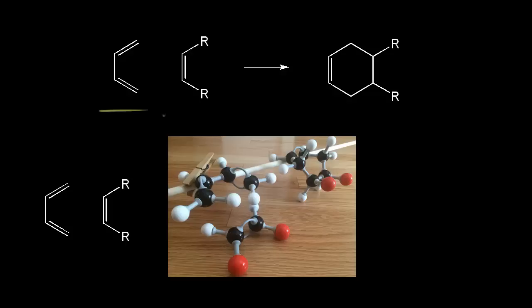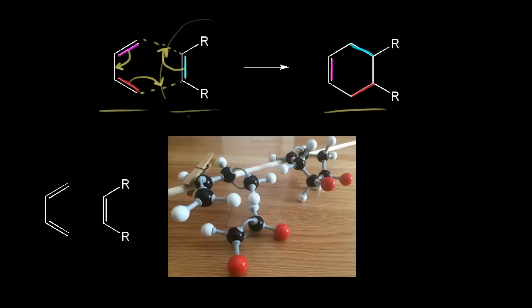In this video, we're going to look at the stereochemistry of the dienophile, but first a quick review of the Diels-Alder reaction. On the left we have our diene, on the right is our dienophile. The Diels-Alder reaction involves a concerted movement of six pi electrons. The pi electrons in red move to form one bond, the pi electrons in blue form another bond, and the pi electrons in magenta become the remaining pi electrons in our product.